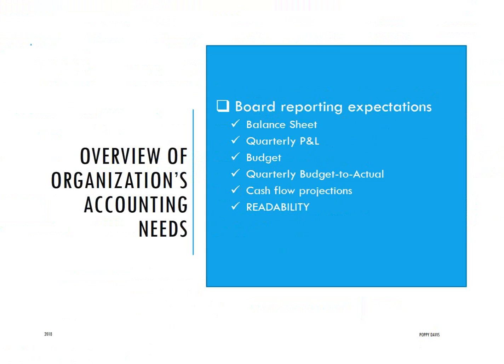In terms of board reporting expectations, the board wants to see a balance sheet. They may not know they want to see a balance sheet, but they do need to see one, and they need to be trained to read it if that's not a skill they already have. They should see a profit and loss or income statement — P&L, income statement, profit and loss are all the same thing. That's a statement showing income and expense for a period. They really don't need to see it monthly; quarterly is probably adequate.